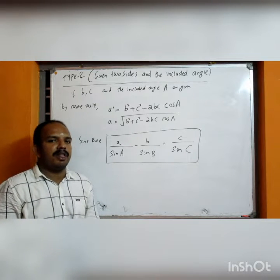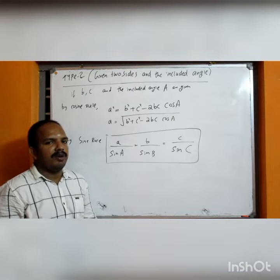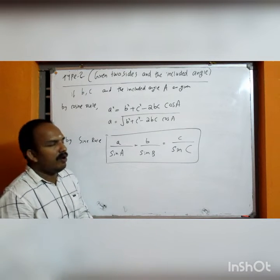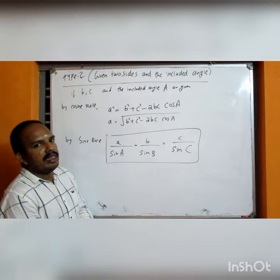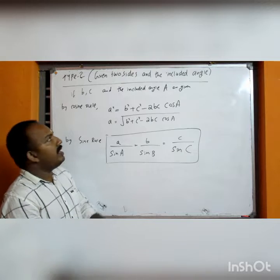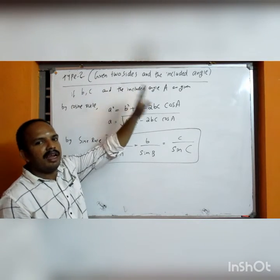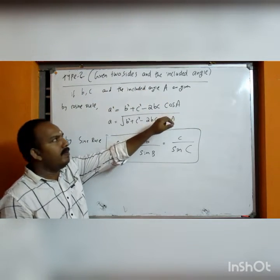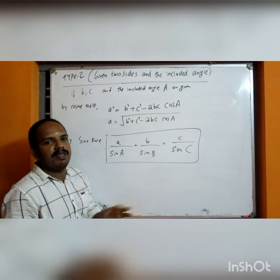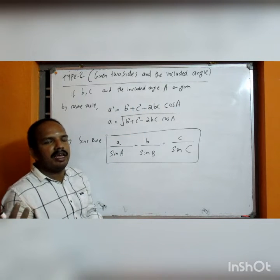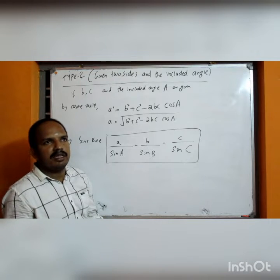We will also cover Differential by First Principle. Now let's start with the same type, which involves 2 sides of the triangle and the included angle. These are the angles — angle A at vertex B, and angle C at AB.